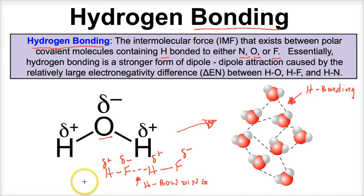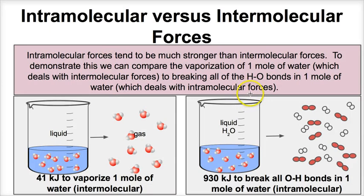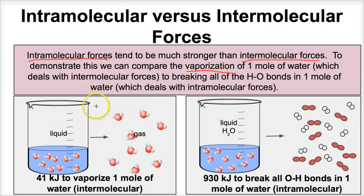Those are the three types of intermolecular forces. Let's take a look at one example tying everything together — intramolecular versus intermolecular forces. Intramolecular forces tend to be much stronger than intermolecular forces. Chemical bonds, or bonds within molecules, tend to be a lot stronger than the forces between molecules or atoms. To demonstrate this, we can compare the vaporization of one mole of water. When we're talking about vaporization, that's a change in state — we're not breaking chemical bonds, just moving molecules away from one another, which deals with intermolecular forces.